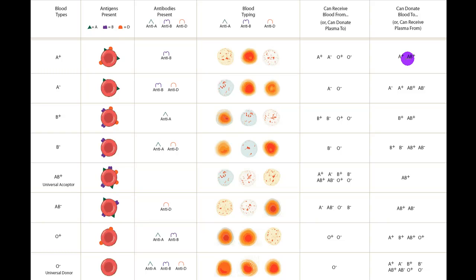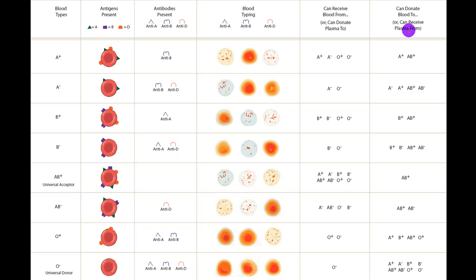I've been looking for a chart that had all of these things together for a long time, and I'm hoping this covers it. The only thing left off is the genetics of blood type inheritance. In this video, we've gone through the major blood types, antigens present, antibodies present, how to read blood types, who can receive blood from whom, who can donate blood to whom, and — something you don't often see together — who can donate and receive plasma.